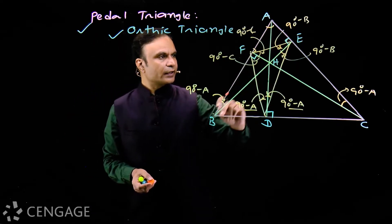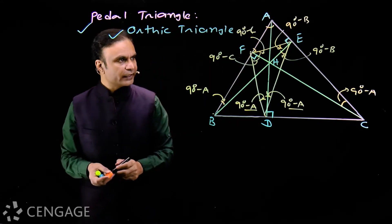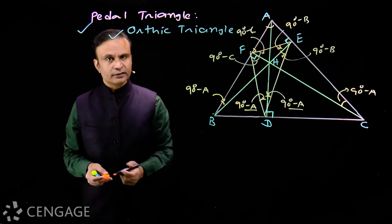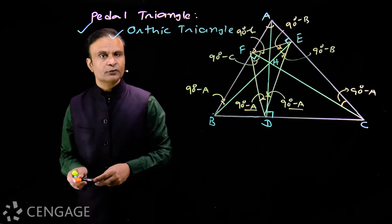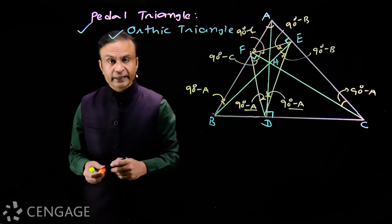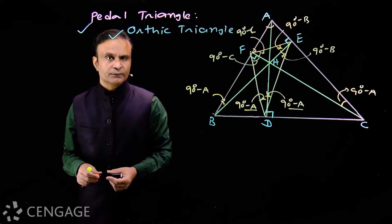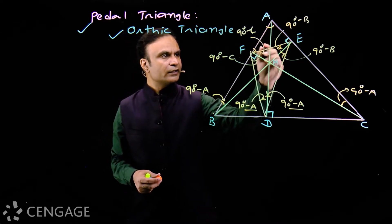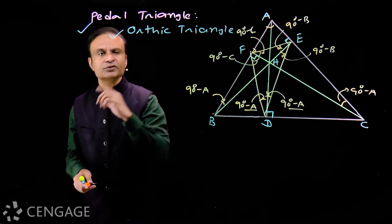This altitude is the internal angle bisector of angle E, and the altitude from vertex C is the internal angle bisector of angle F in triangle DEF. That means the orthocenter of triangle ABC is the incenter of triangle DEF. Lines AD, BH, and CF are altitudes of triangle ABC, so H is the orthocenter of ABC — but these same lines are the internal angle bisectors of triangle DEF. Internal angle bisectors meet at the incenter. This is one of the most important results.